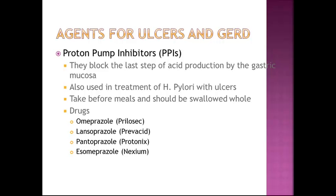Another medication class prescribed for ulcers and GERD is proton pump inhibitors. Most patients are prescribed H2 blockers first; if those don't help their symptoms, physicians will move to proton pump inhibitors. They block the last step of acid production by the gastric mucosa and are also used in the treatment of H. pylori ulcers along with an antibiotic. They need to be taken before meals and swallowed whole. If patients can't swallow the capsules whole, they can open the capsule and spread the contents over a soft food like yogurt or cottage cheese before eating a full meal.